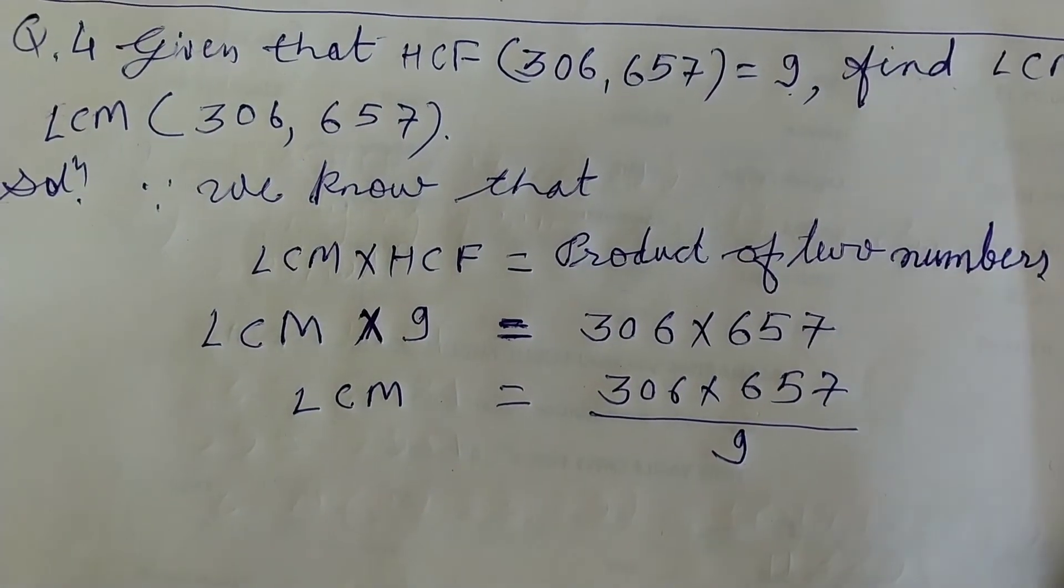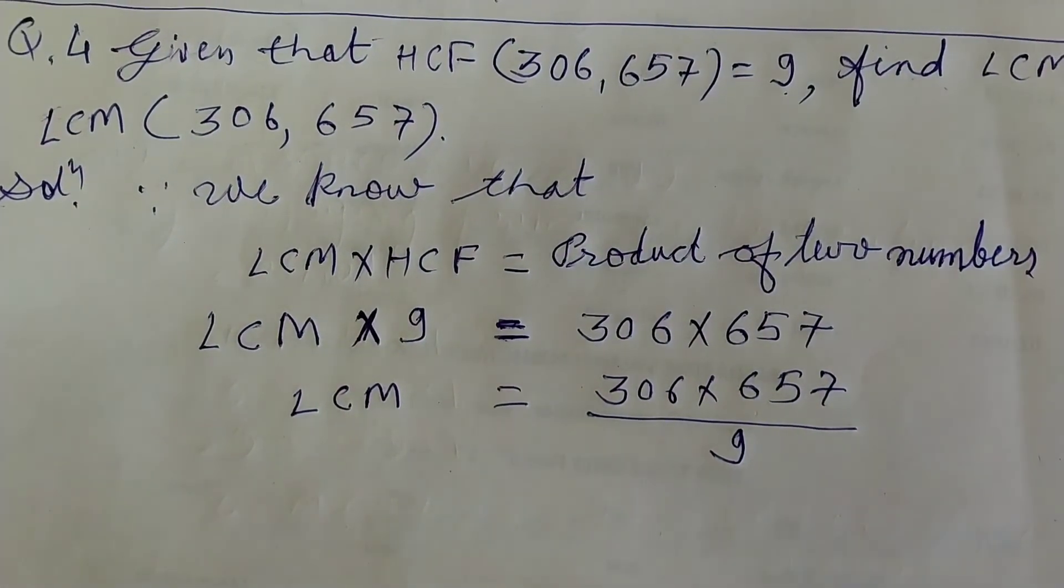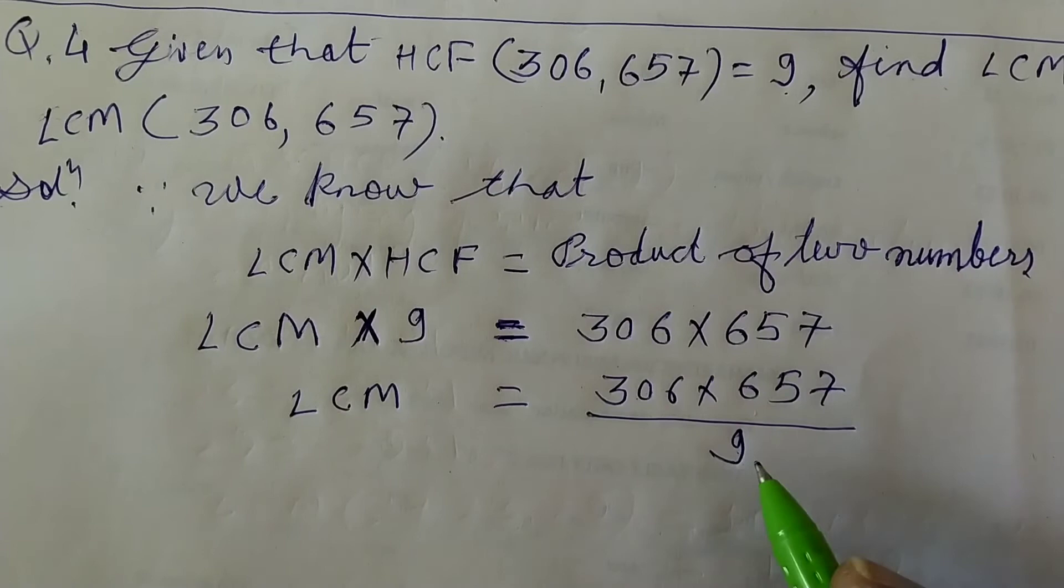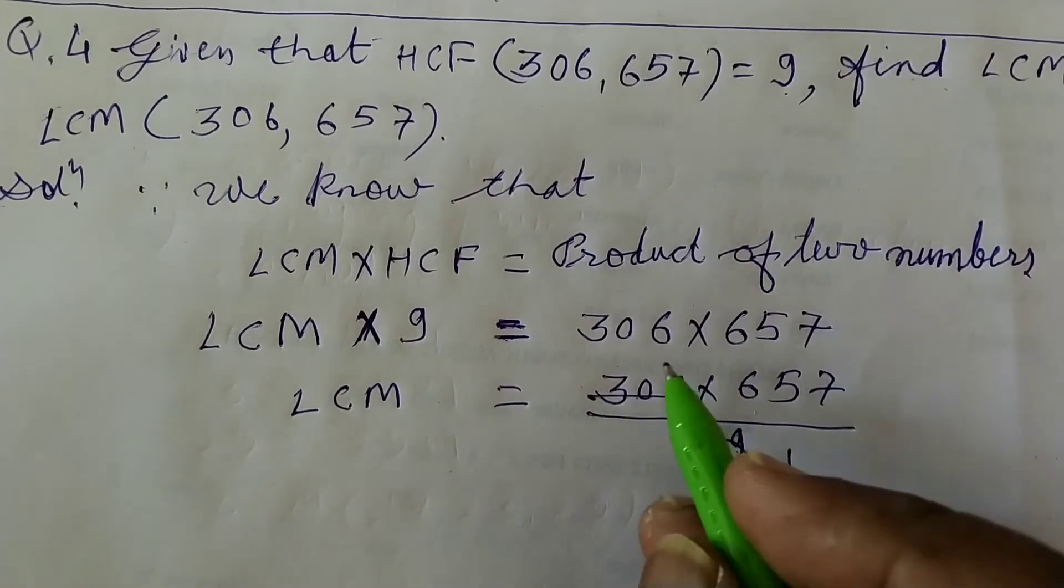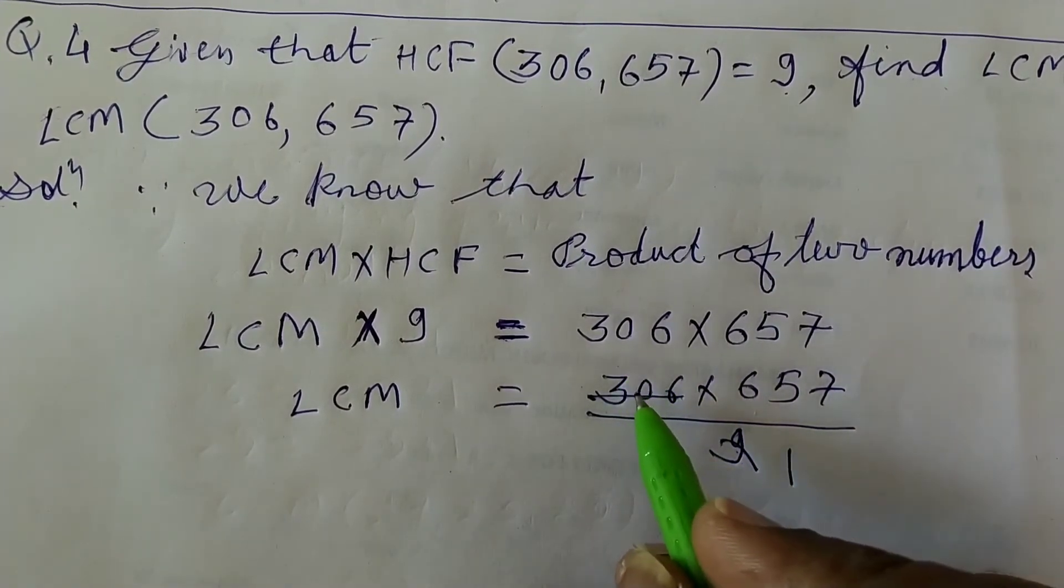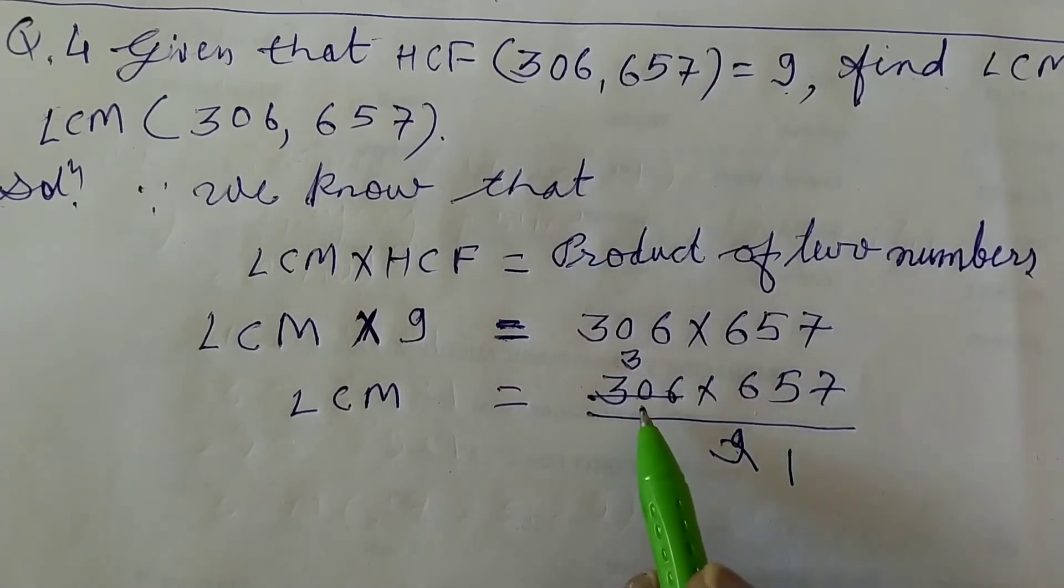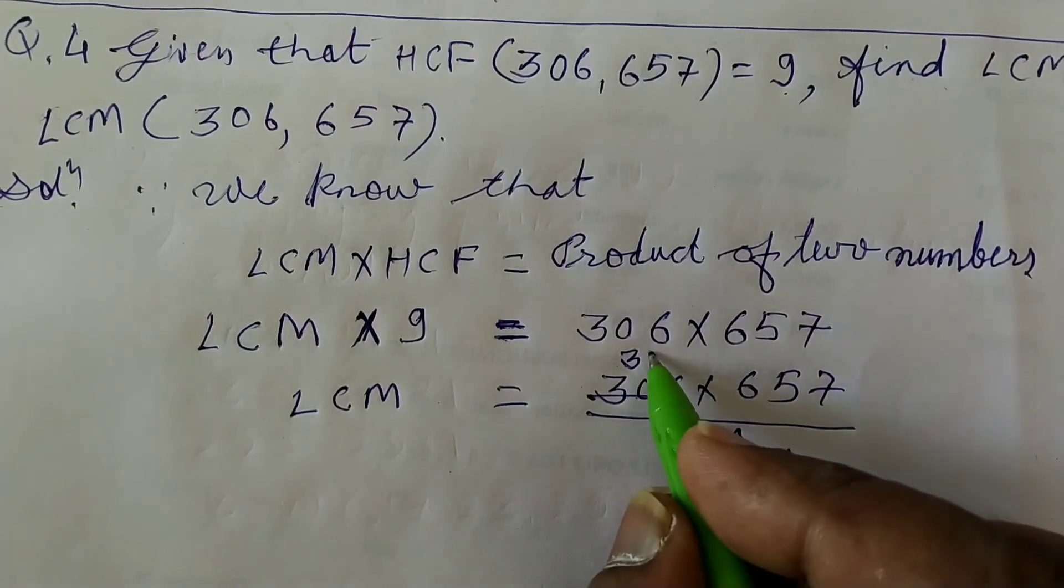We will divide by 9. We will check divisibility by 9, 3 plus 0 plus 6, 3 plus 0 3, 3 plus 6 9. The sum of the digits is 9. This number is divisible by 9. 9 ones are 9, 9 2s are 18, 9 3s are 27 and 3 carry forward 36, 9 4s are 36.